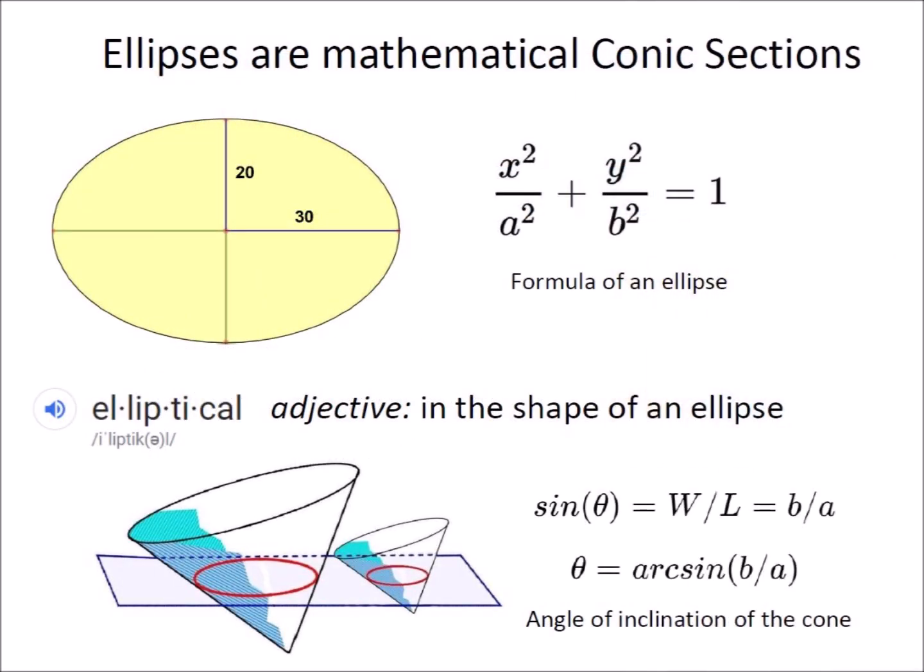Do not let anyone tell you that ellipses are ovals. Ellipses are geometrical figures described by a precise mathematical function. Ellipses are conic sections produced by cutting a cone at an angle relative to its central axis. The angle of inclination of the cone can be deduced from the width to length ratio of the ellipse.